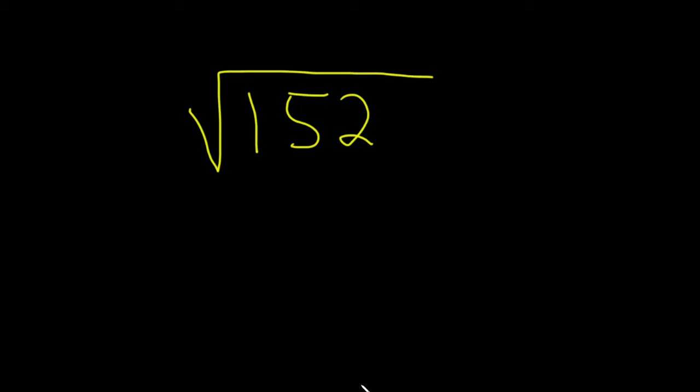Simplify the square root of 152. Let's go ahead and try to work through this. So when we're doing this, we want to think about what is the largest factor of 152 such that we can take its square root and get a whole number.